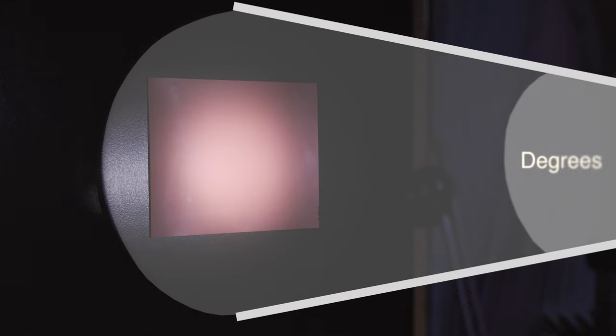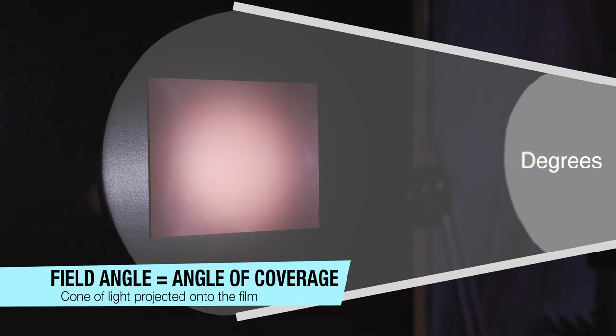A lens projects a cone of light onto the film plane and the shape of that defined cone is characterized in degrees. This is what is referred to as the field angle, also known as the angle of coverage.